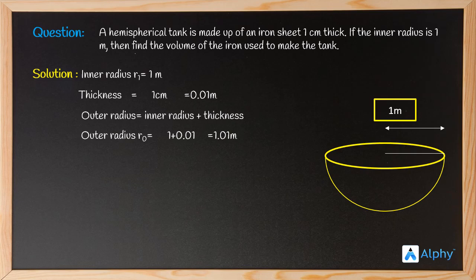Now, volume of iron used equals outer volume minus inner volume. Basically, volume of iron used is actually the outer volume minus the inner volume. So now we'll write the formula for both of them.